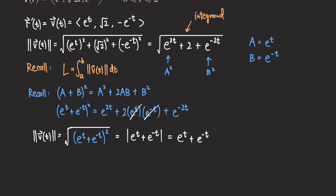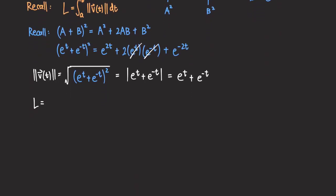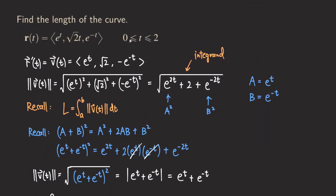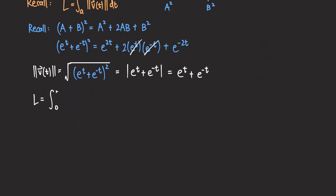Our integrand is now quite simple to integrate. Going back to the original problem, t goes from 0 to 2, so those are our limits. The integral for the arc length is the integral from 0 to 2 of (e^t + e^(−t)) dt. The antiderivative of e^t is e^t, and the antiderivative of e^(−t) is −e^(−t). We evaluate this from 0 to 2.